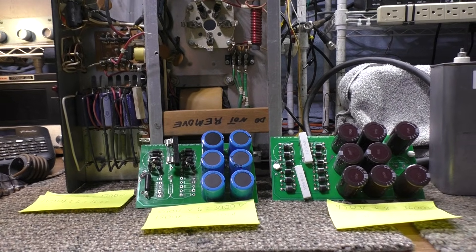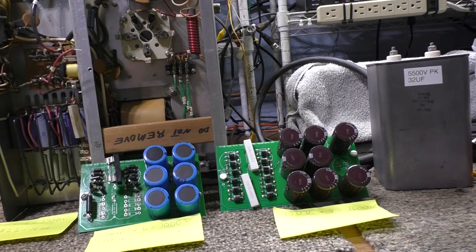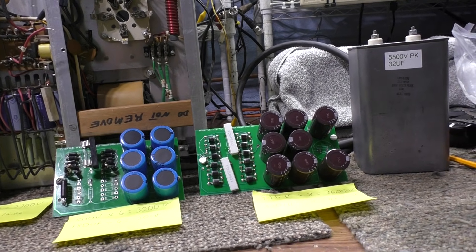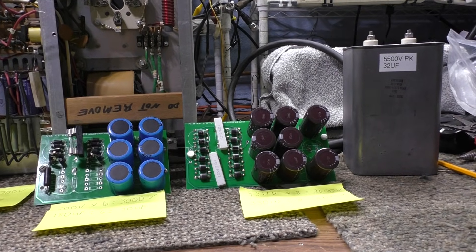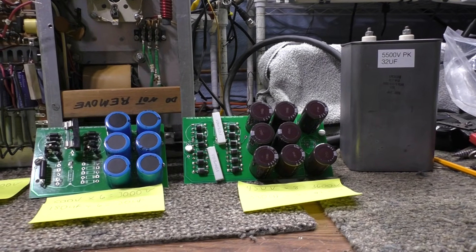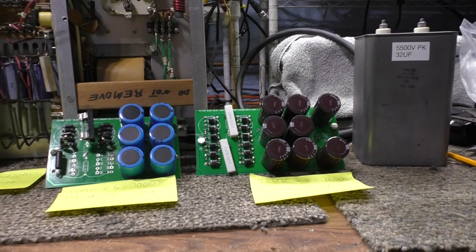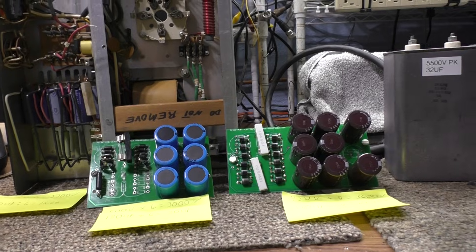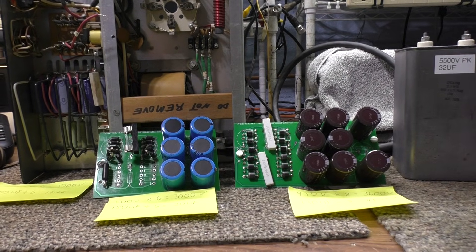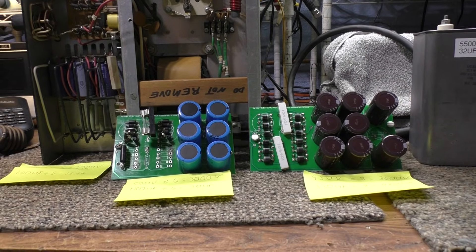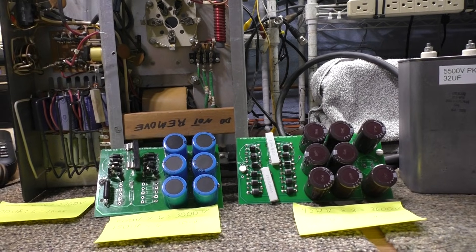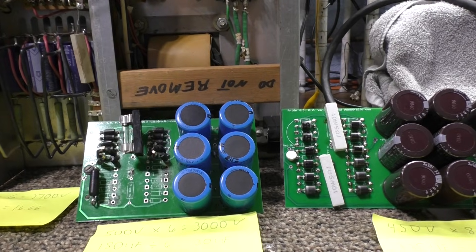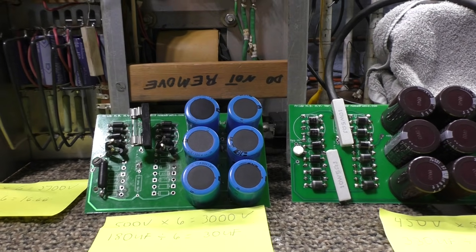First of all, they normally call it a bank because it's a bunch or a group of electrolytic capacitors in a high voltage amplifier to get to the proper rated voltage. A sweep tube normally runs on 800 to 1000 volts.